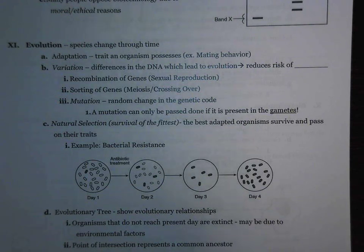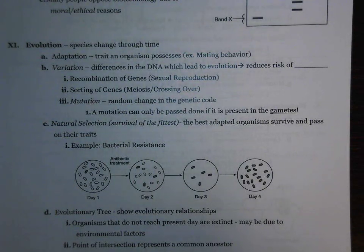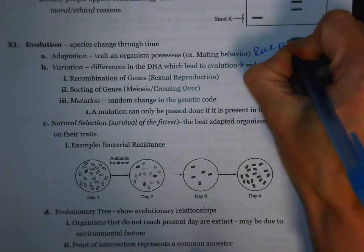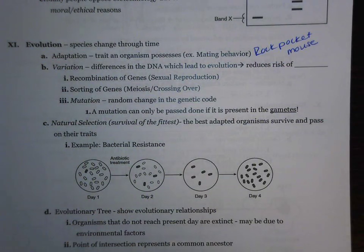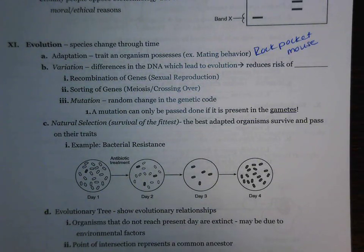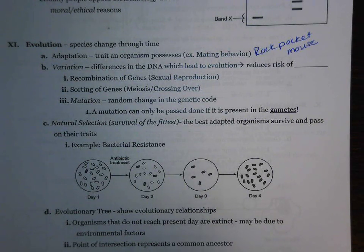First topic: we have adaptation. An adaptation is a trait an organism possesses. An example could be like a mating behavior. Also think back to when we did the rock pocket mouse. Remember, some of the rock pocket mice were dark colored and some were light colored. They both existed in the initial population. But then what happened was there was a lava flow and the lava flow happened to change the color of the background. Now different mice were better adapted for that environment. Because of that, some of those mice were better able to survive and reproduce.